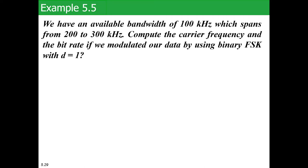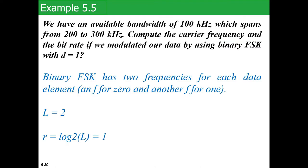Now let us try to understand FSK a bit more with an example. We have an available bandwidth of 100 kilohertz spanning from 200 to 300 kilohertz. We need to compute the carrier frequency and the bit rate if we modulate our data using binary FSK with d equals 1. Binary FSK has two frequencies for its data elements: one frequency for zero and another for one. Since we have two frequencies, the level of signals l equals 2.